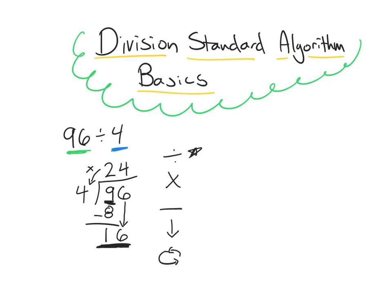The answer is 4, so we've done the division. Now we multiply 4 times 4, which is 16, and write that below. Then we subtract: 16 minus 16 is 0. The last step is to bring down, but there's nothing to bring down, so we know we're done. Since we have a 0, that means we were able to divide 96 by 4 evenly with nothing left over — so our quotient is 24.